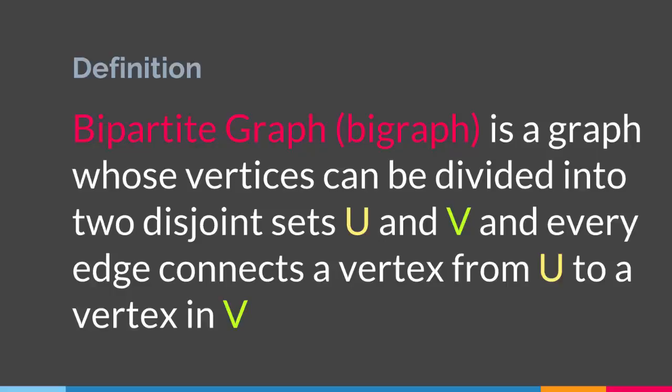In bipartite graphs, vertices are divided into two sets and every edge connects a vertex from one set to another vertex in the other set. That is basically a bipartite graph, or a bigraph.